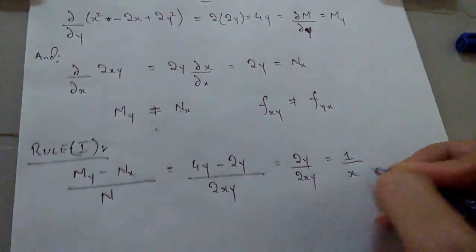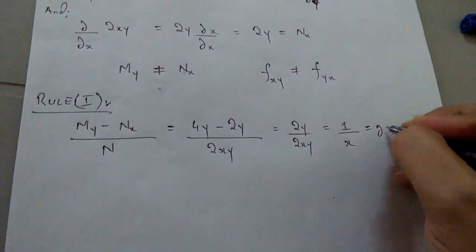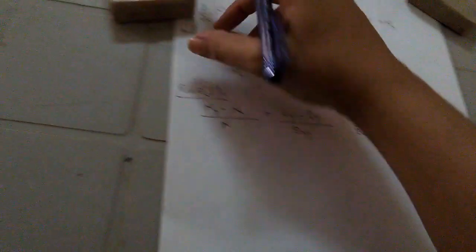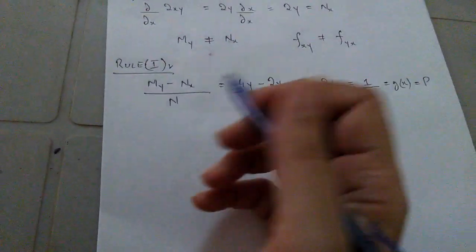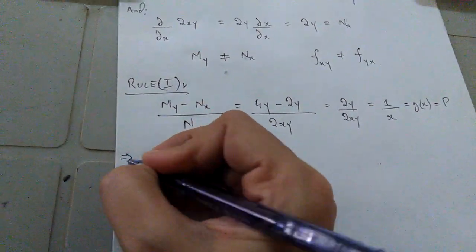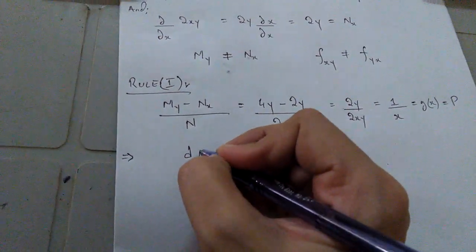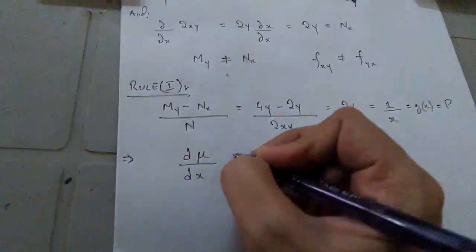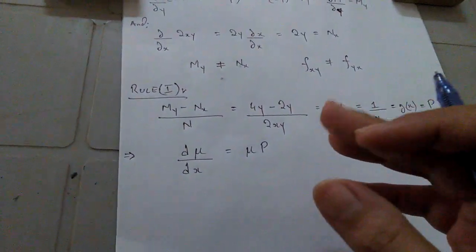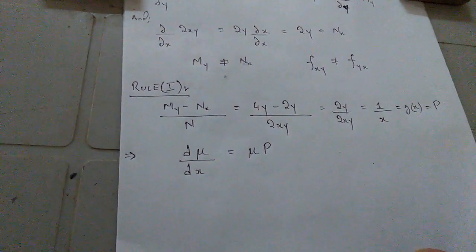This gives us simply 1/x, which is a function of x only, so Rule 1 applies. We call it p = 1/x. Now we use the Rule 1 formula: dμ/dx = μ · p = μ · (1/x). We solve this by separating variables: dμ/μ = dx/x. We are not discussing the proof of this rule here; we are simply applying the technique.